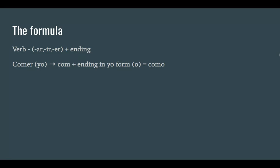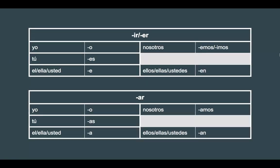So how do we know what the ending is? For IR and ER verbs: in the yo form it's 'o'; in the tú form it's 'es'; in él, ella, usted it's 'e'; in nosotros it's 'emos' for ER verbs or 'imos' for IR verbs; and for ellos, ellas, ustedes it's 'en'.